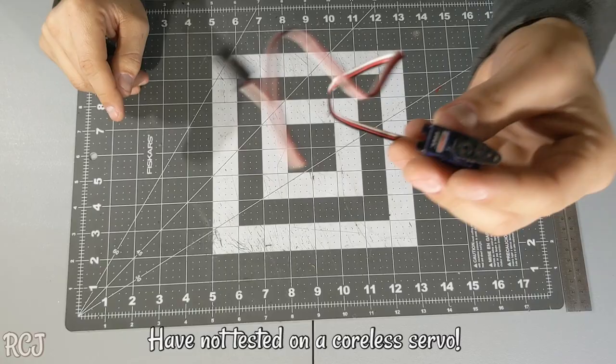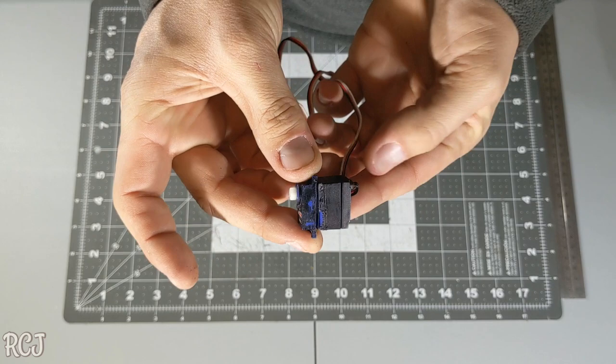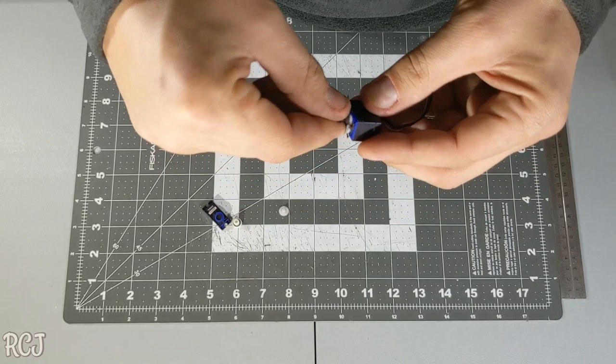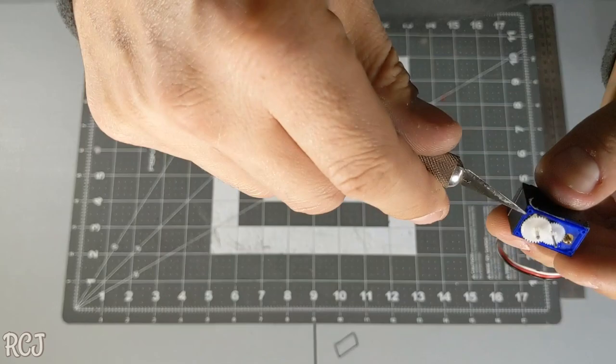Let's get started on that. If you have a junk servo lying around, go grab it. Now that we got the servo horn off, we can slide that off, slide all the gears off, just throw that stuff all around.